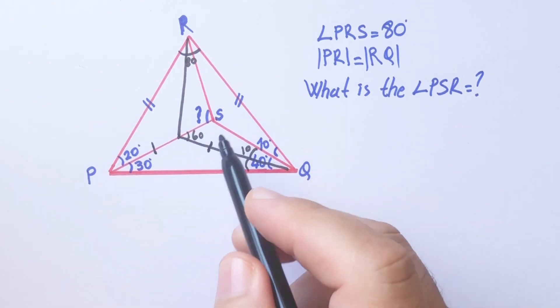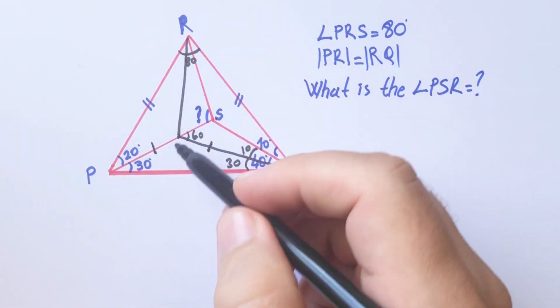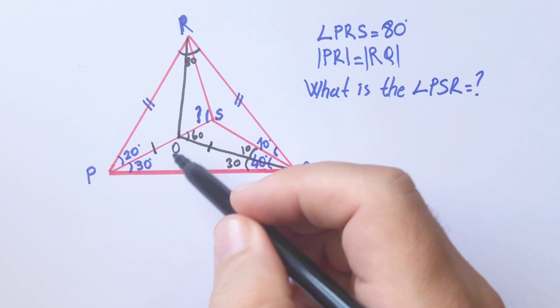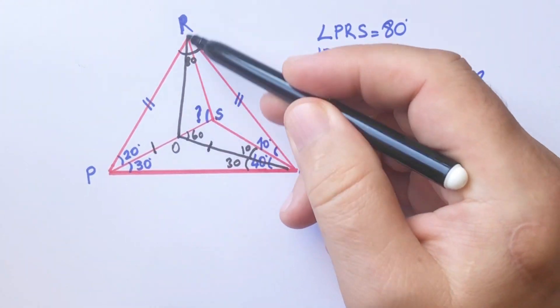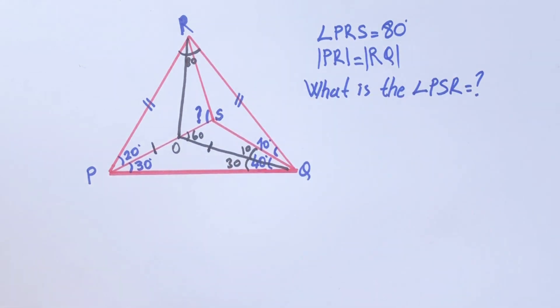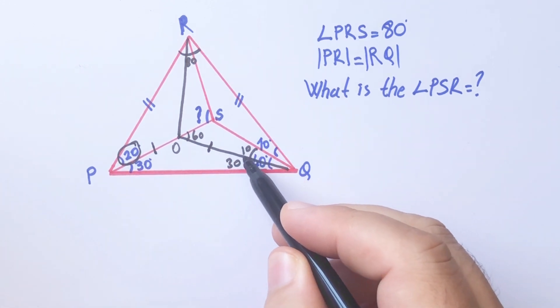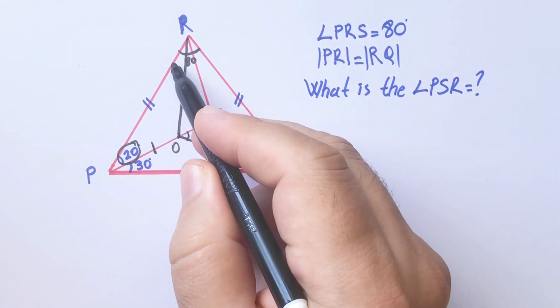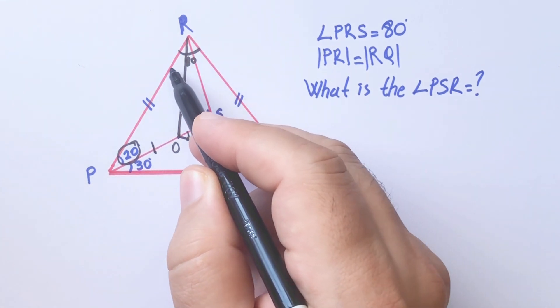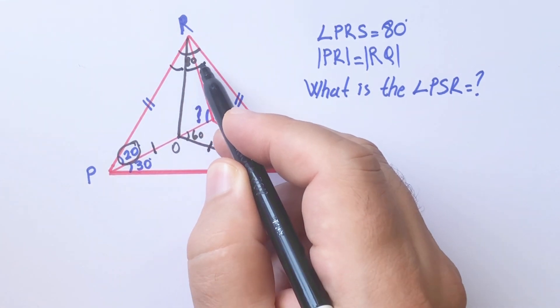So here is 20 degrees. These two angles must be equal: 40 degrees and 40 degrees here, and then here 60 degrees.